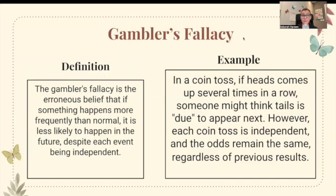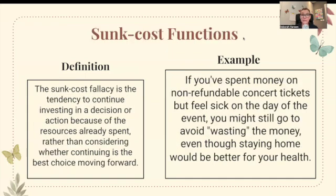The gambler's fallacy is the erroneous belief that something happening more frequently than normal is less likely to happen in the future, despite each event being independent. For example, if heads comes up several times in a row in a coin toss, someone might think tails is due — but each toss is independent and the odds remain the same. The sunk cost fallacy is the tendency to continue investing in a decision because of resources already spent. For instance, going to a concert while sick because you paid for non-refundable tickets.